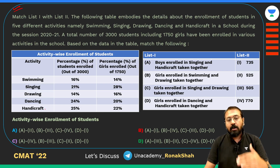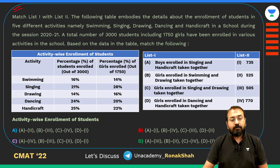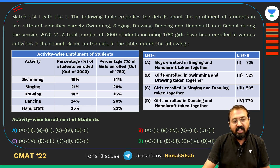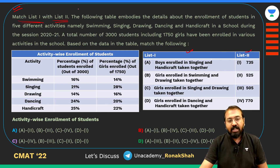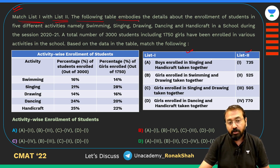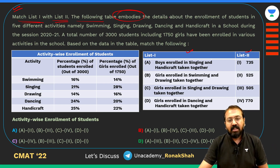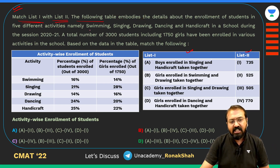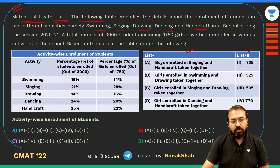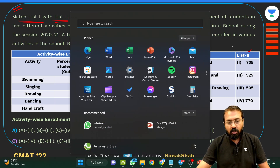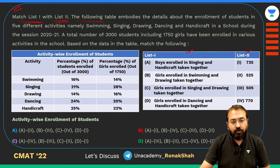What they have given is: match List 1 with List 2. You are also given some data — the following table embodies the details about the enrollment of students in five different activities — swimming, singing, drawing, dancing, and handicraft — in a school during 2020-21. A total of 3000 students including 750 girls have been enrolled.